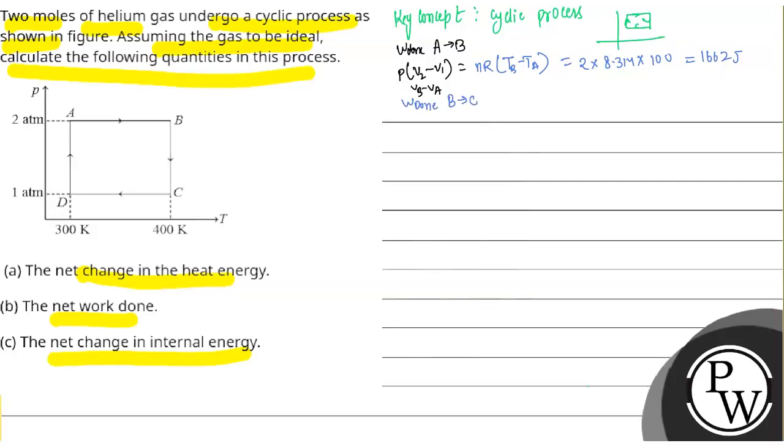Work done in the process B to C: temperature is constant, therefore it is isothermal process. Isothermal work done is minus nRT ln P2 by P1. So we can write 2 into 400 into ln 2. This negative sign because we have to write 1 by 2, which gives the negative sign. When you solve it, the value will be minus 4610.26 joules.